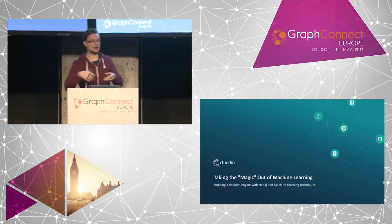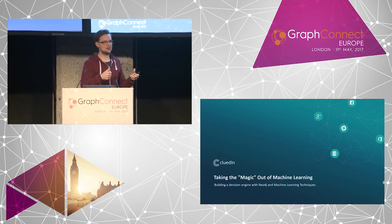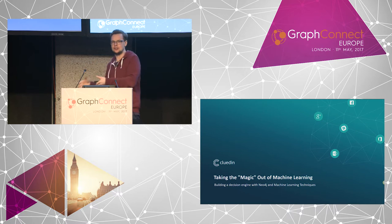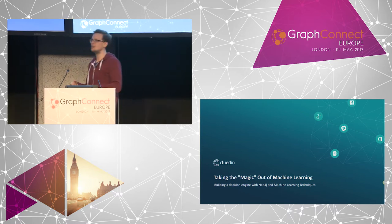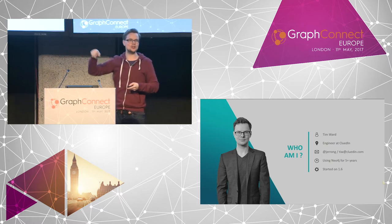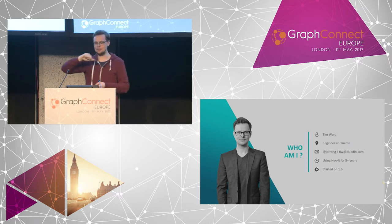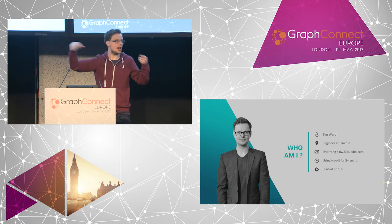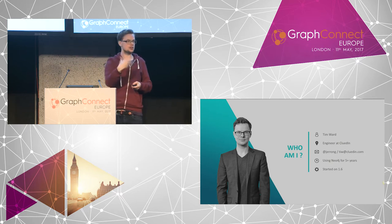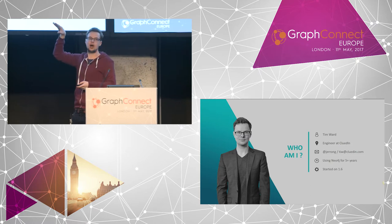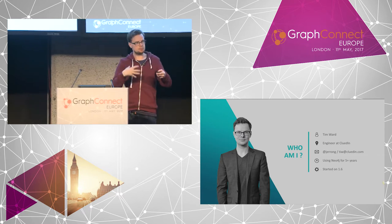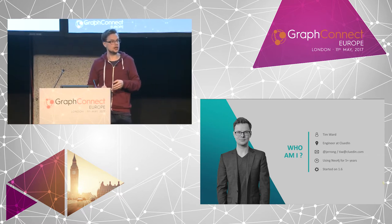There's a lot of mystery and magic that usually surrounds this topic. What I'm going to take you through is how we use the combination of the graph combined with machine learning techniques to actually take a lot of this mystery out of the situation. My name's Tim Ward. I'm an engineer at a company called CluedIn. We've been using Neo4j for well over five years — I personally started on version 1.6 — and we're currently running a piece of software that has over 180 million nodes in the graph.